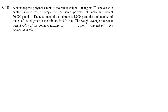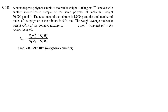In question 128 we need to calculate the weight average molecular weight of a polymer mixture consisting of two monodispersed samples. The molecular weight of each fraction is given and the total moles of the mixture is also given. As discussed previously, one mole equals Avogadro's number of chains, so mole is actually the number of chains. To calculate weight average molecular weight we need to find how many moles of each sample are present in the mixture. Let's assume N1 moles of the first sample and N2 moles of the second sample are mixed. Since the total number of chains and weight of the mixture are given, we can write N1 plus N2 equals 0.04.